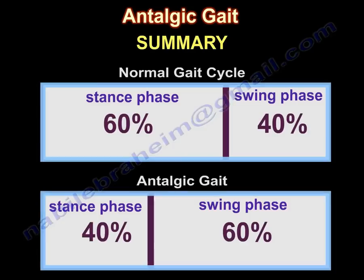In summary, the normal gait cycle consists of 60% stance phase and 40% swing phase. In antalgic gait, there is the reverse: the stance phase constitutes 40% of the gait cycle and the swing phase constitutes 60% of the gait cycle.